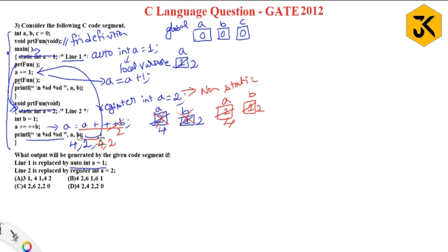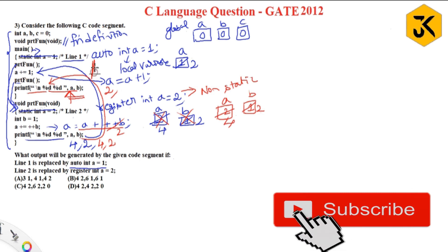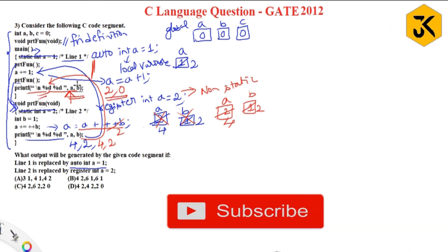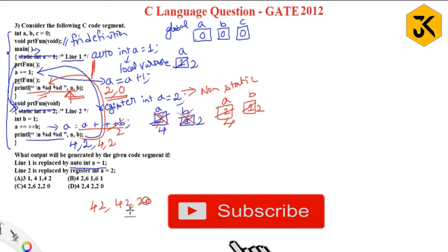Now the cursor moves to the final print statement in main. It tries to print its local variable a, whose value is 2. For b, there is no local variable b in main, so it goes to the global variable b, which has value 0. So this prints 2, 0. Program execution is complete. The final output is 4 2 | 4 2 | 2 0, so option D is the correct answer.